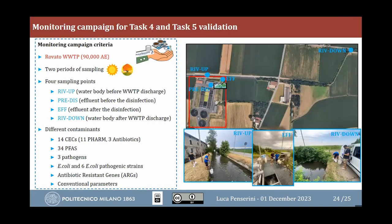An ongoing monitoring campaign collects data to validate models for the last two tasks. A wastewater treatment plant with 90,000 equivalent inhabitants is being sampled across two periods and four sampling points — before and after discharge into surface water and before and after disinfection within the plant. Monitoring targets include 14 contaminants of emerging concern (pharmaceuticals including antibiotics), PFAS, pathogens (E. coli, pathogenic E. coli strains), antibiotic resistance genes, and conventional parameters.